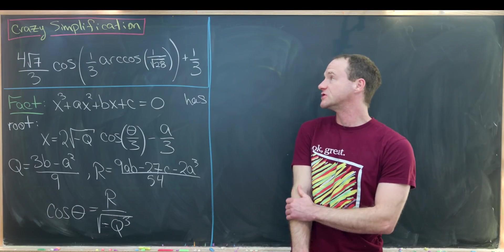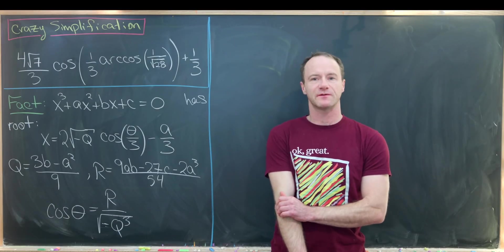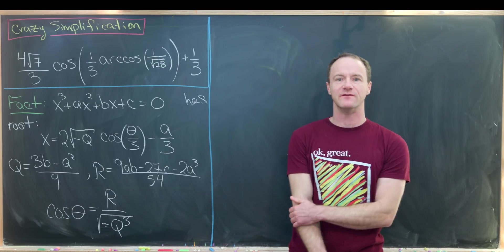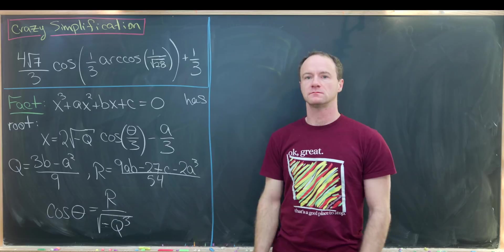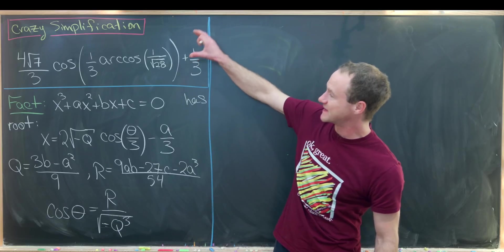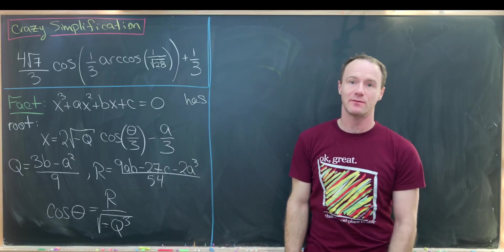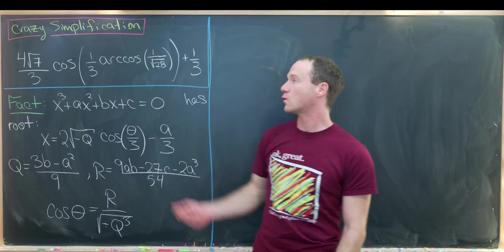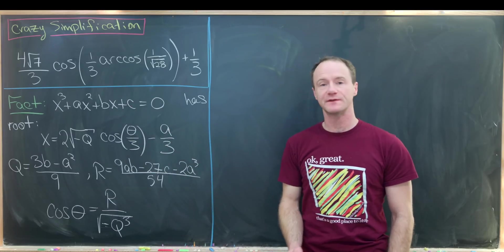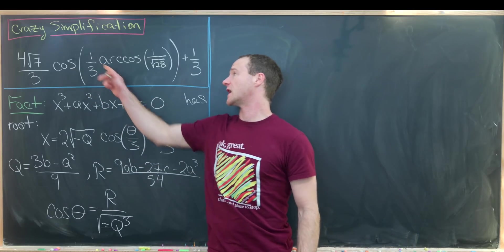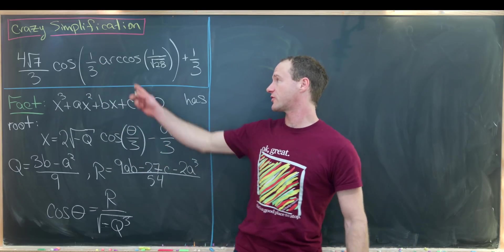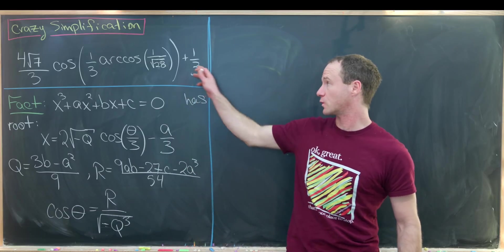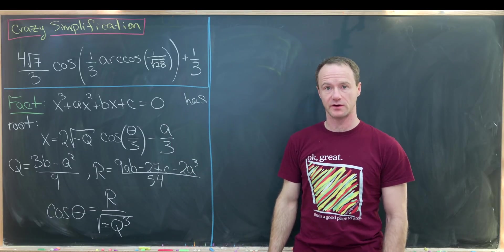I found this crazy trigonometric simplification on the math stack exchange and I thought I'd make a video about it. Our goal is to take this crazy number and make it look nicer. This is four times the square root of seven over three, cosine of one third times inverse cosine of one over the square root of 28, plus one third.